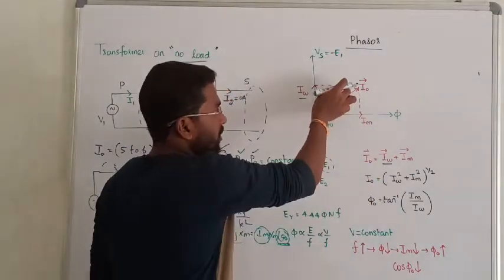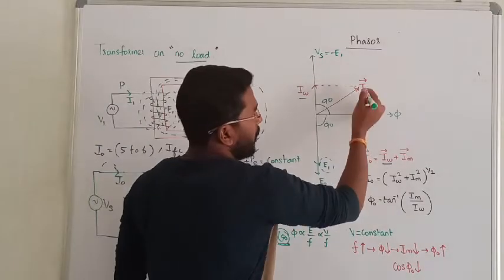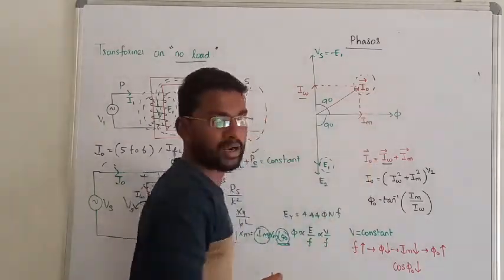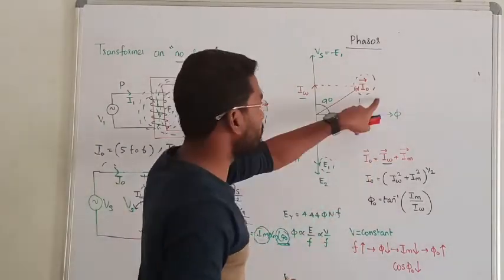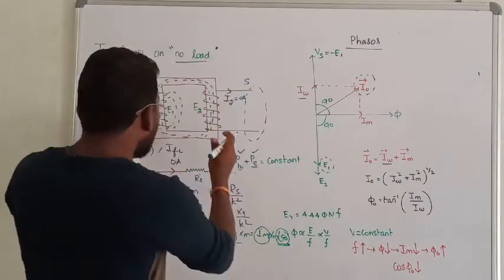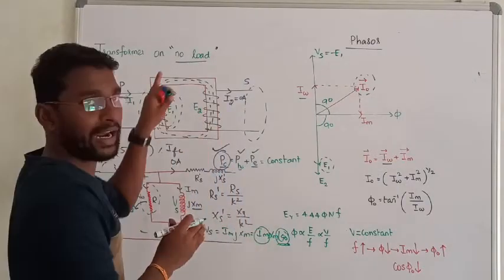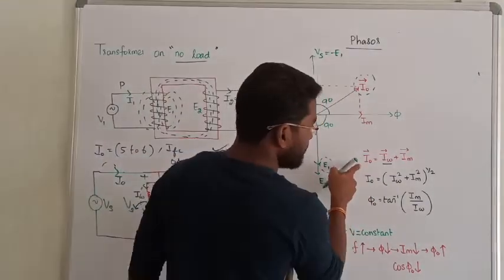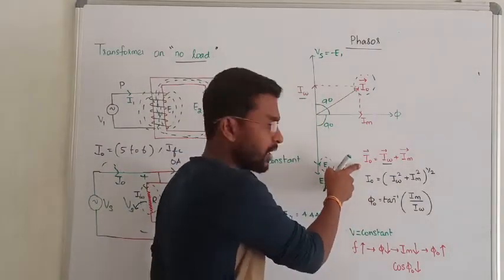Using the parallelogram law, we identify the resultant current, which is the total no-load current. The magnitude is the vector sum of winding current and magnetizing current, and the phase angle is given by tan-inverse of IM over IW. That is how a transformer reacts under no-load.